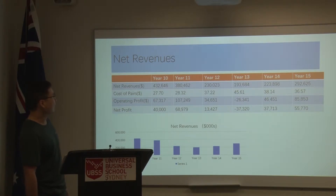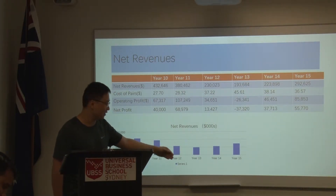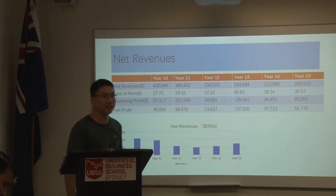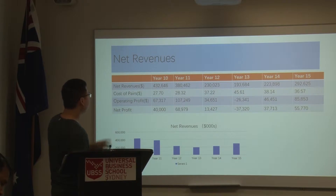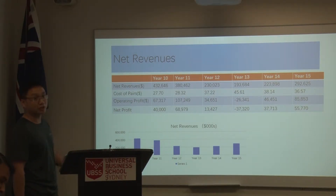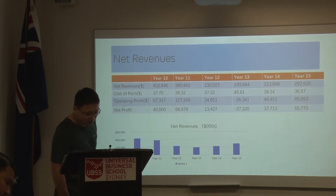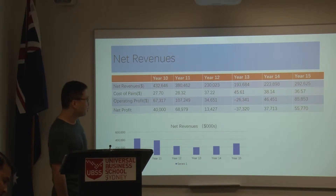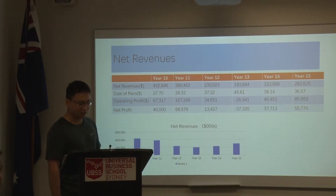First, I will analyze the first key performance indicator: net revenue. According to this graph, we can see in the first period from year 11 to year 13 a dramatic decrease, and in the second period from year 14 to 15 an increase. We know revenues are also known as sales. We can see that in year 12 we decreased more than 39%. The reason is because we wanted to gain high market share at the North American internet market, so we decreased the price, which caused the net revenue decrease in year 12.